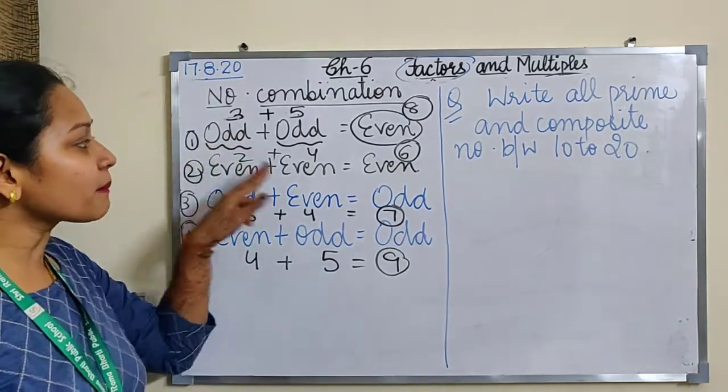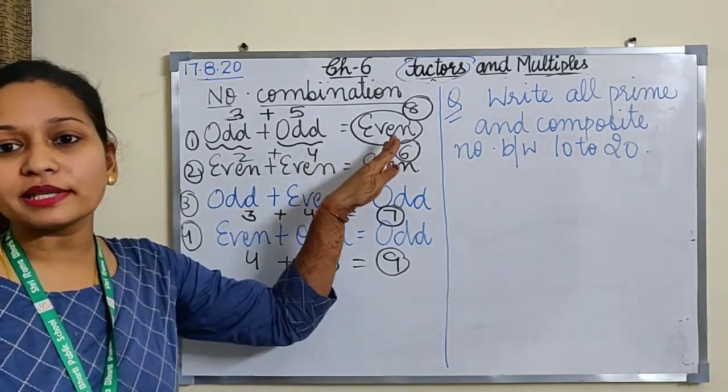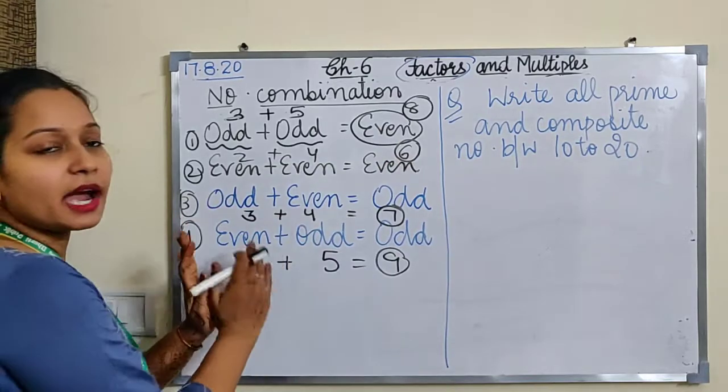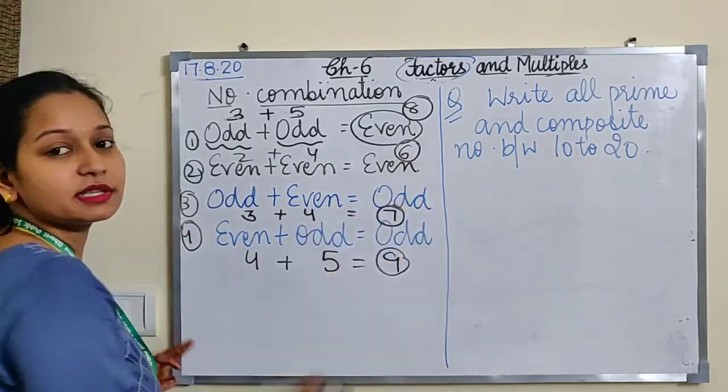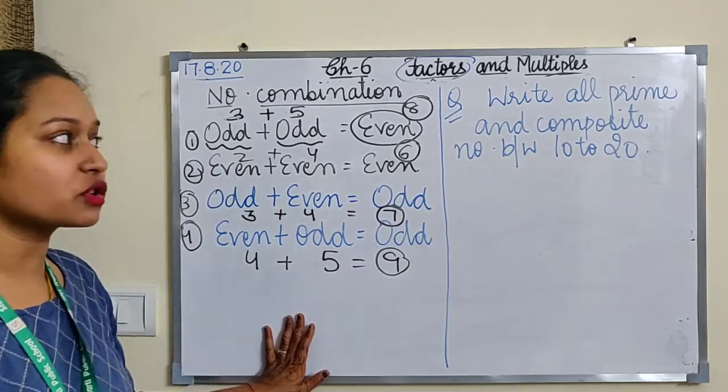Even 4 plus odd 5 will give me 9, also giving me odd. When same type of numbers are added, it will give me always even. And when 2 different kinds of numbers are added, it will always give me odd number. These are few number combinations.